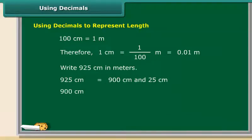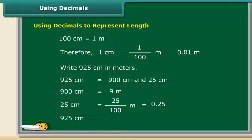900 centimeters are equal to 9 meters. 25 centimeters are equal to 25 upon 100 meters, that is 0.25. So, 925 centimeters are equal to 9.25 meters.